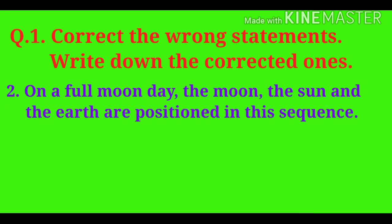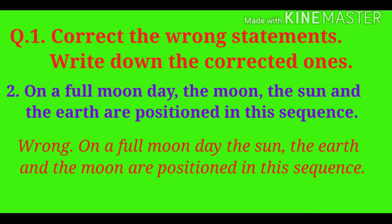Second statement: On a full moon day, the moon, the sun and the earth are positioned in this sequence. Wrong. Correction: On a full moon day, the sun, the earth and the moon are positioned in this sequence.